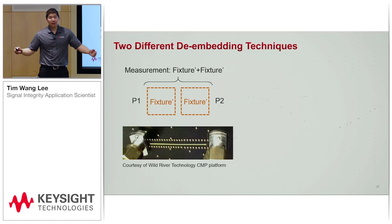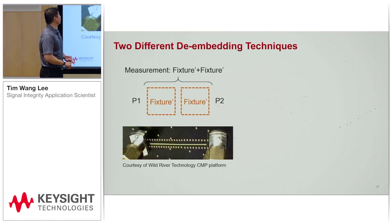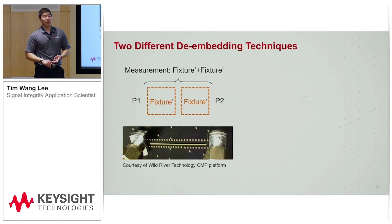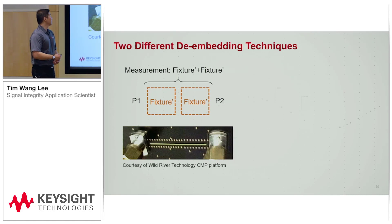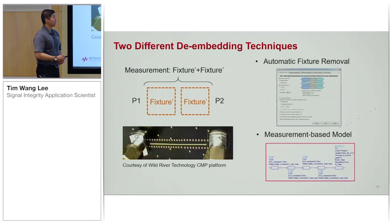There are many techniques. Mike mentioned one, which is AFR — automatic fixture removal — but there are other techniques that we can do in the virtual platform in simulation. For example, you measure a 2x through. This is the 2x that I'm showing, and you can also show it in automatic fixture removal as a measurement-based model.